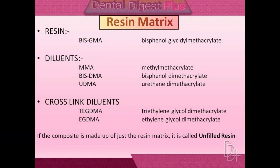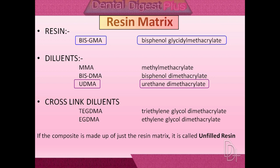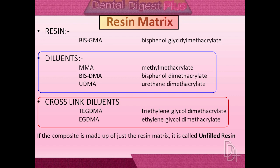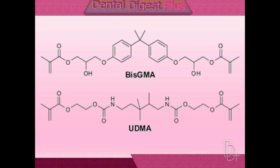The resin matrix is a plastic resin material that forms a continuous phase and binds the filler particles. The principal monomers are bisphenol glycidyl methacrylate (BisGMA), also called Bowen's resin, and urethane dimethacrylate (UDMA). Other diluent monomers are also part of the resin matrix. Because BisGMA and UDMA have almost five times the molecular weight of methyl methacrylate, they reduce polymerization shrinkage proportionately. Note that methyl methacrylate in unfilled acrylic resin has the disadvantage of polymerization shrinkage, which is reduced by using BisGMA instead.